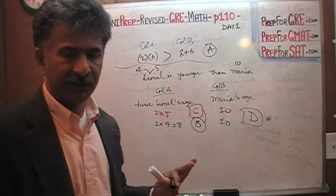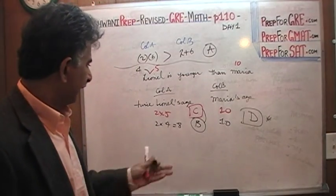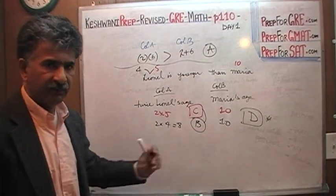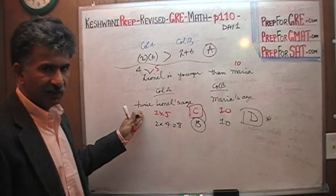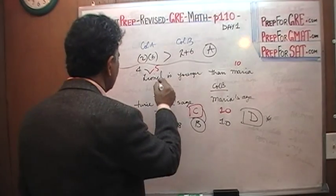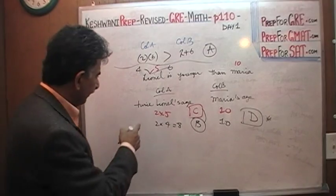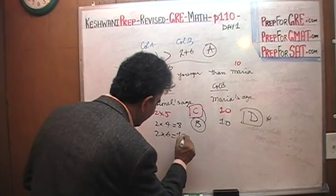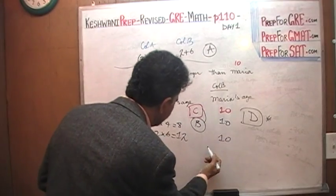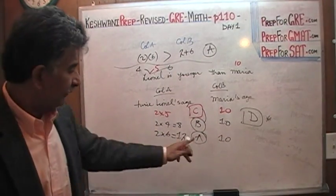Is it possible for the answer to turn out to be A? We are done now since we have conflicting answers, but I'll show an extra scenario. What if Lionel happens to be six? Then twice his age would be 12 versus 10. The answer would be A. But this part was unnecessary.